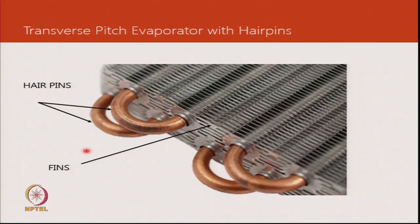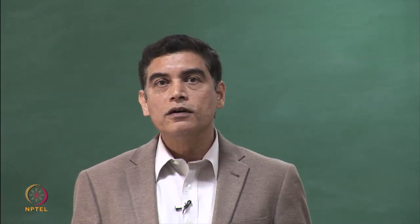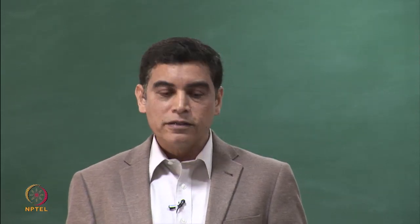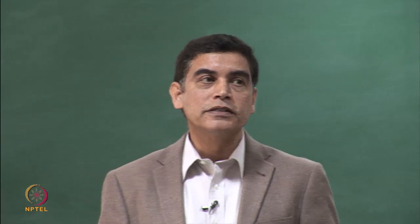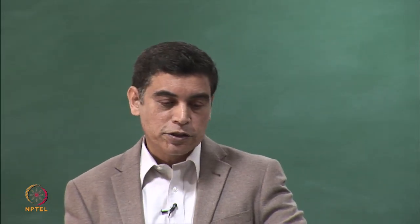The hairpins can be slid into the fins without great initial contact. An expansion process follows — either hydraulic or using a bullet expander. Most coil manufacturers today use bullet expansion, where an expander travels the entire length of the tube to firmly bond it to the aluminium fins, also adding structural strength to the heat exchanger.